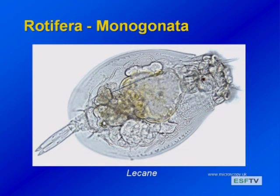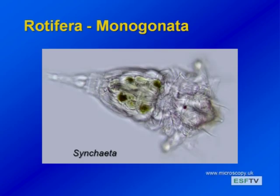Some don't have cases — here's a naked one where you can see the little foot, the coronal band, the trophi, the gut, and all the organs. Many of these are really clear — you might think about why they're clear. Here's another one, Synchaeta, with its foot and corona. Real diversity of forms in these Monogonata.